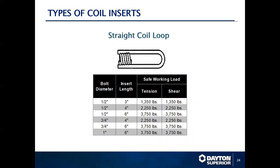Some of the more common straight loop coil inserts are half inch by three, half inch by four, and half inch by six inch. These are often used in a variety of concrete forming projects. The loop insert is very useful because you can throw it over the top of a piece of rebar and thread your formwork to that insert, using the rebar as your anchoring system.